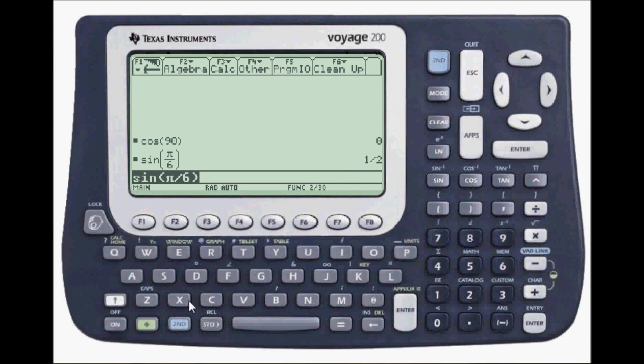If I want an approximate value, then I can press the green diamond key and enter for an approximate point five.